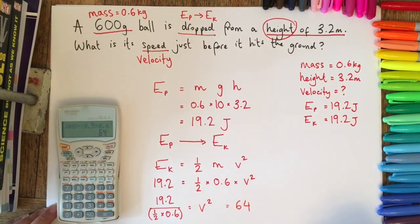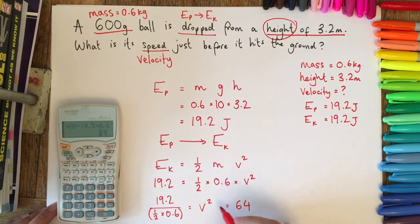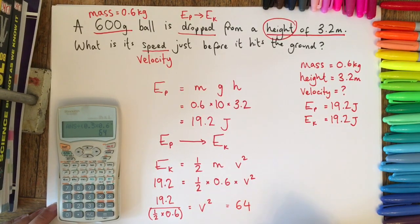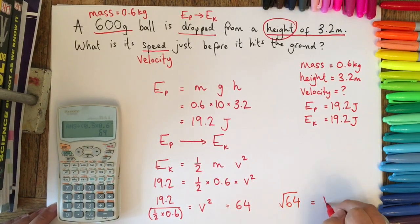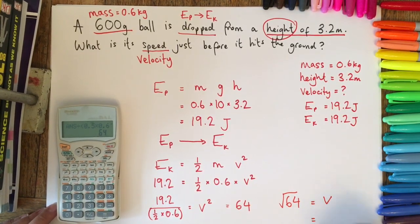Now we're almost there, but we need to remember that 64 is actually v squared. So therefore we need to do the square root of 64, which will give us v, and this will be 8.